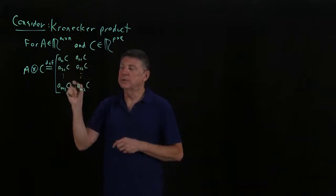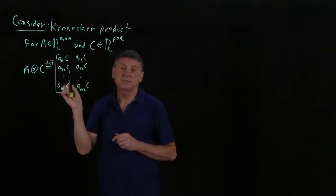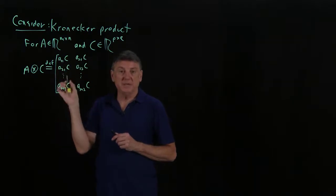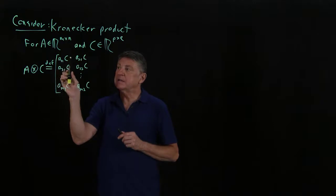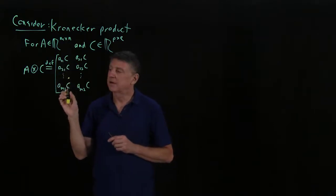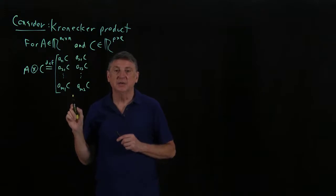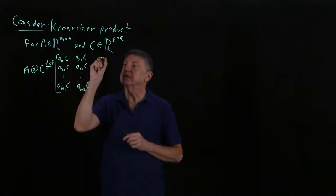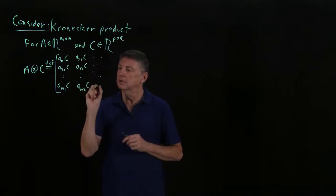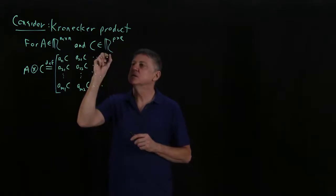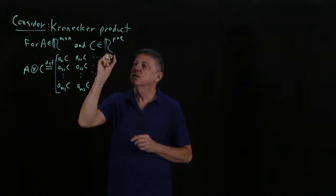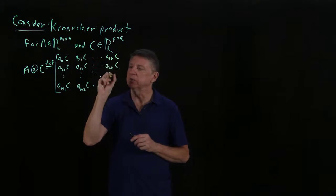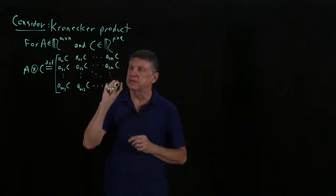Now each column isn't really a column — it's a column of matrices. So this actually represents a column of matrices. Since C has P rows and Q columns, this entire thing, which looks like a column, is actually Q columns of a matrix. And then we have another Q columns, continuing until we reach entry Aₙ₁ times C, entry A₂ₙ times C, and so on.